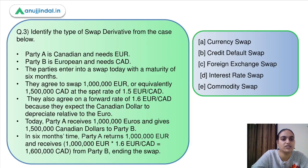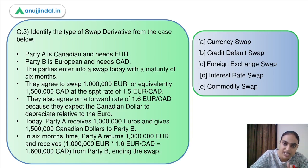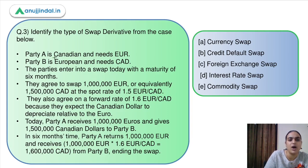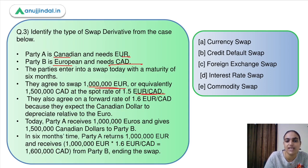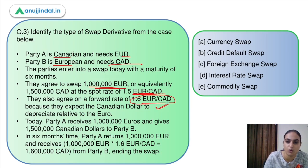Moving to question three: identify the type of swap derivative where a Canadian party needing euros and a European party needing Canadian dollars swapped 1 lakh euros at an agreed rate today, then swapped back at a pre-agreed future rate. This is a foreign exchange swap.